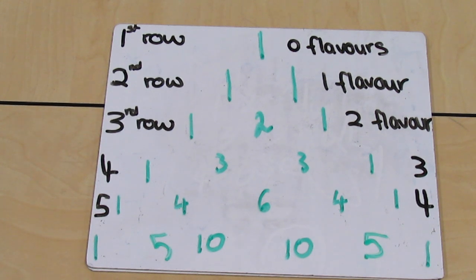If you were given one flavor of ice cream, then the number of ways you can choose zero is one, and the number of ways you can choose one is one. That goes down the side.